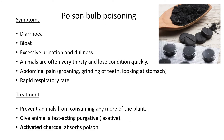Symptoms of Cape tulip poisoning include diarrhea, bloating where the stomach enlarges, excessive urination, and dullness where the eyes look quite lifeless. Animals are often very thirsty and lose their condition quickly because they stop eating. They have abdominal pain and may be groaning or grinding their teeth and looking at their stomachs. They also usually have a rapid respiratory rate, breathing very quickly.